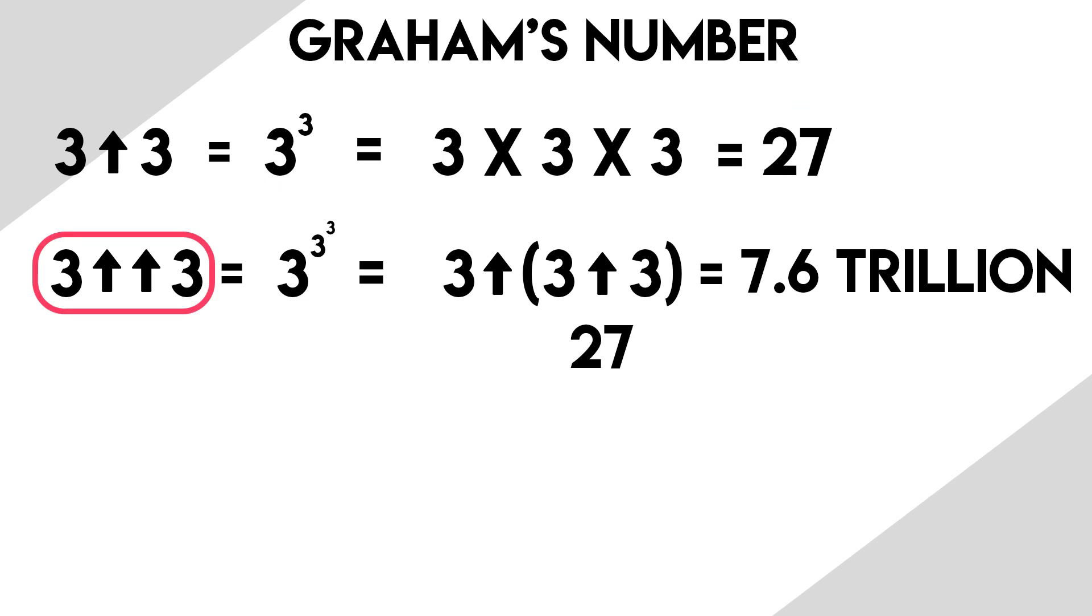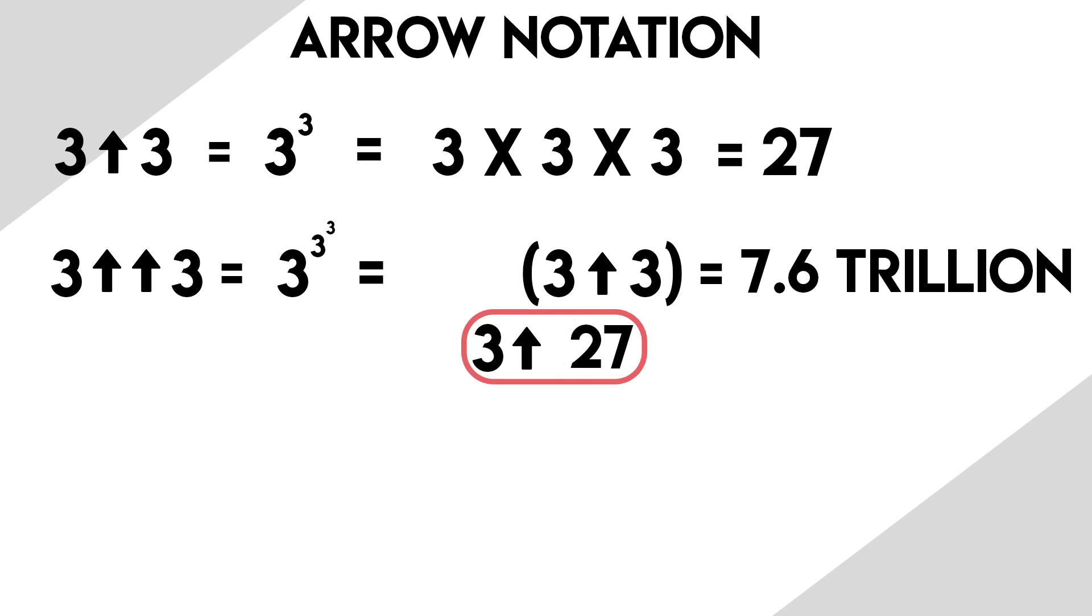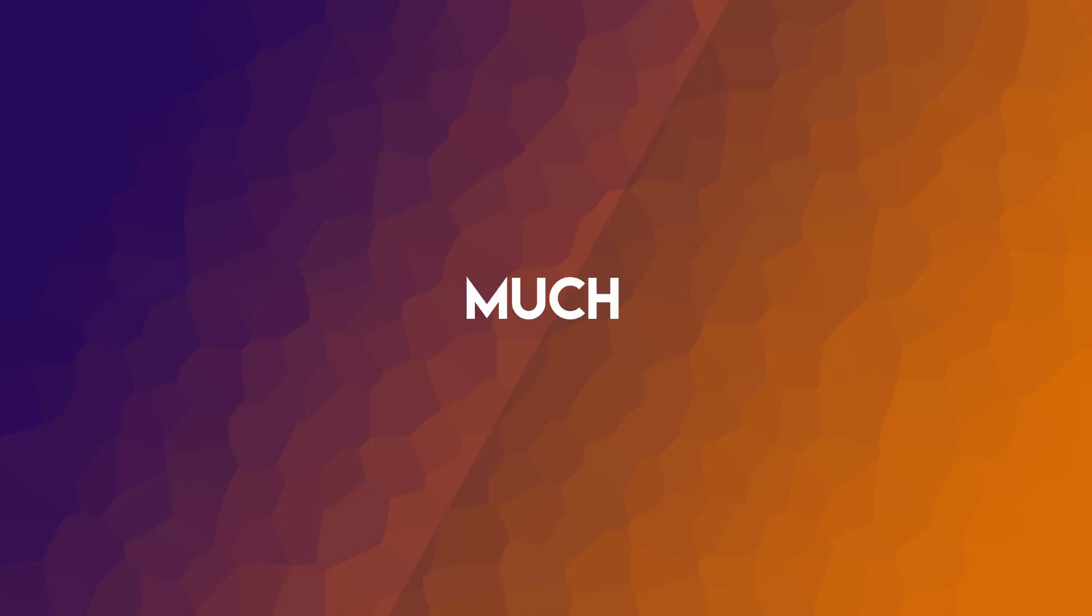Next we go with 3 arrow arrow 3. This is 3 to the power of 3 to the power of 3. And as I said earlier, 3 to the power of 3 is 27, so we're left with 3 arrow 27, which is 3 to the power of 27. This is a much bigger number,